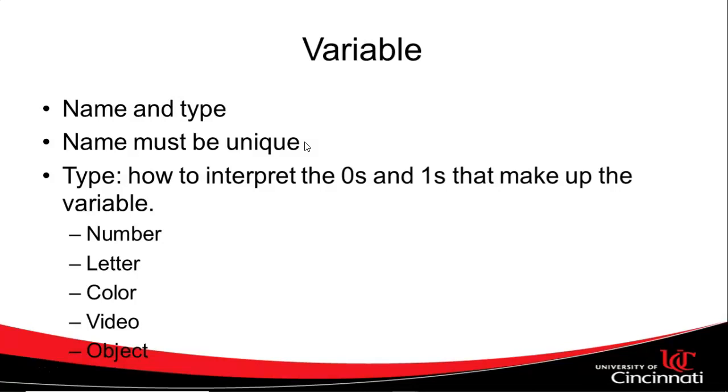Now type. Type is how we interpret the zeros and ones that that variable contains. So you probably heard that computers speak in the language of zeros and ones. We can convert those zeros and ones to numbers. From numbers, we can convert them to something else. We can leave them as numbers if we want, or we can convert it to a letter, a color, a video, an object, a movie, any kind of other representation, a JSON field, whatever you want.